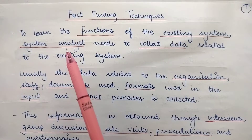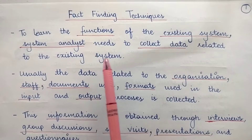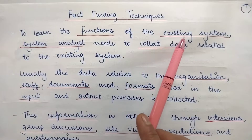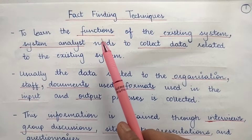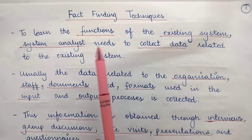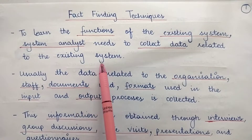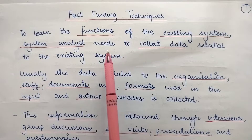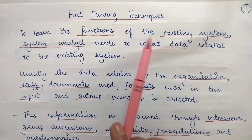Hi everyone, today we are going to learn about the fact-finding techniques in system analysis and design. Basically, the fact-finding techniques are used to learn about the functions of the existing system. Whenever a system analyst is asked to develop a new information system for an organization, he first needs to know the functions of the existing system, and for that he needs to collect data related to the existing system. In order to collect this data, there are some fact-finding techniques.